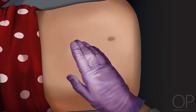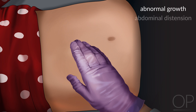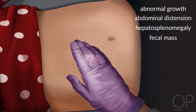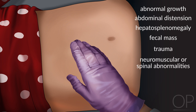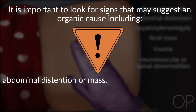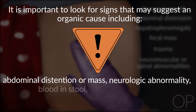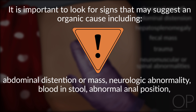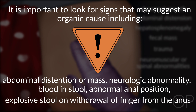The examination focuses on signs of abnormal growth, abdominal distention, hepatosplenomegaly, fecal mass, as well as signs of trauma and neuromuscular or spinal abnormalities. It is important to look for signs that may suggest an organic cause, including abdominal distention or mass, neurologic abnormality such as loss of cremasteric reflex or anal wink, blood in stool, abnormal anal position, or an explosive stool on withdrawal of finger from the anus.